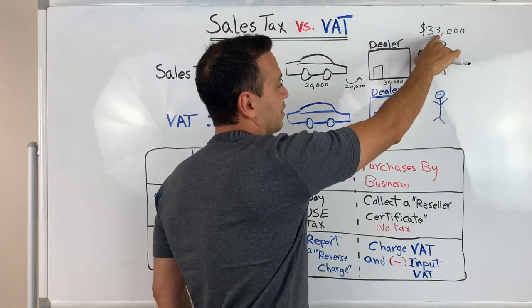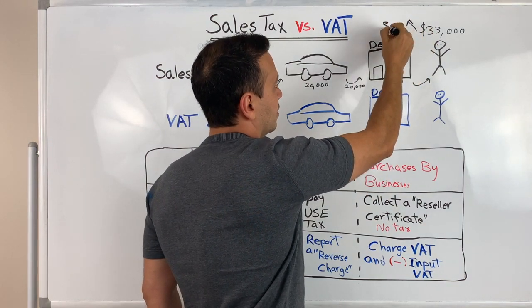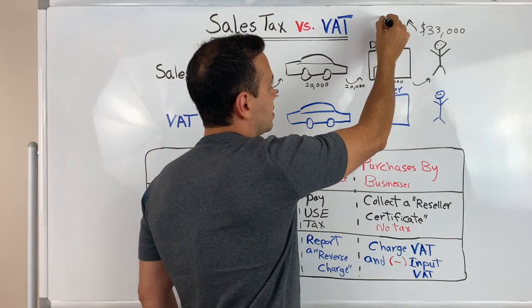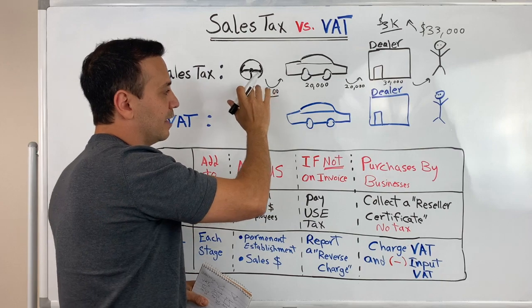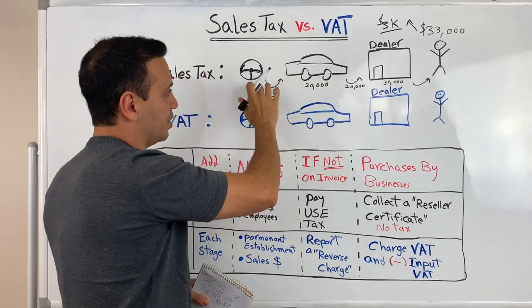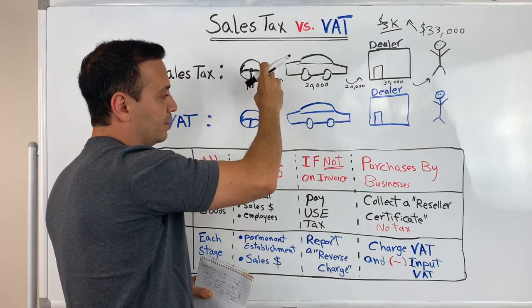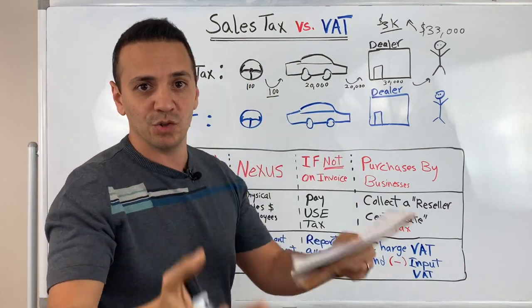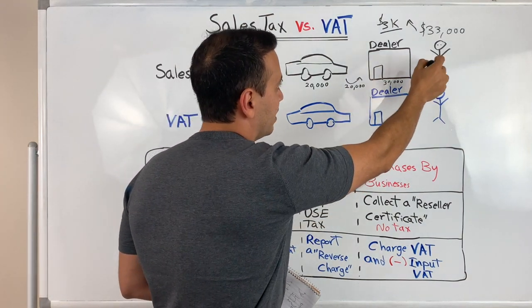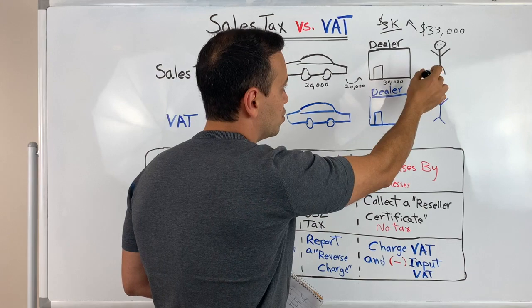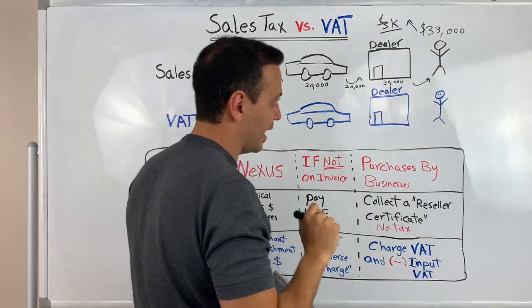From the $33,000, $30,000 goes to the dealer and $3,000 goes to the government. Basically, this is how sales tax works — no tax is added in the supply chain as long as you can obtain a reseller certificate from every company that buys the part to manufacture and resell it as a finished product. The only sales tax added is at the final stage when it's sold to the end consumer for $33,000, and $3,000 of it goes to the government.